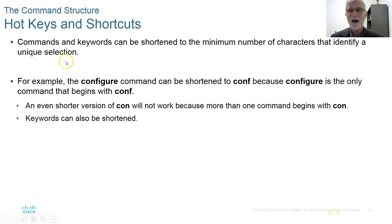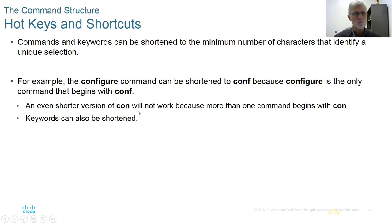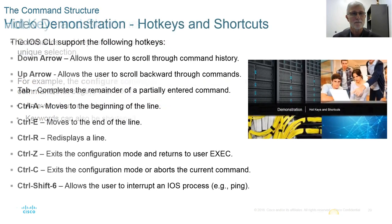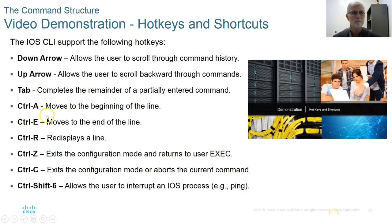There are hot keys and shortcuts. You can shorten commands — for example, type conf instead of configure — as long as the abbreviation isn't ambiguous with another command. If two commands start with the same letters, you'll need to type more characters. Hot keys I use a lot are Ctrl+Z to exit configuration mode, Ctrl+A to get to the beginning of the line, and the arrow keys to scroll back and forth on the command line.